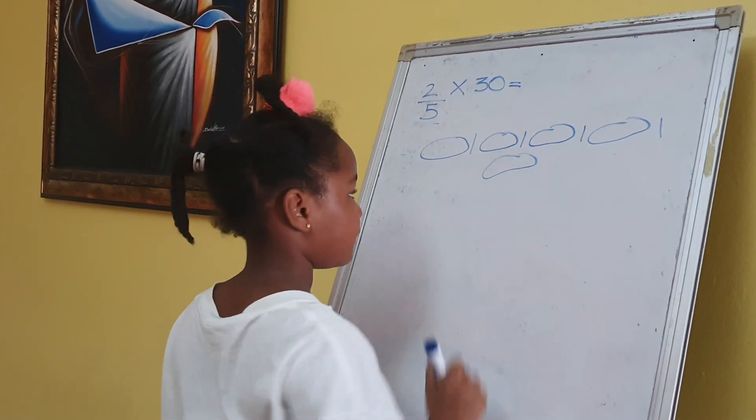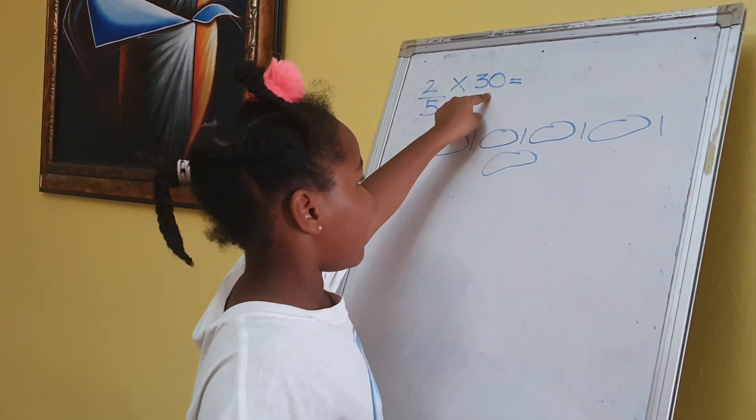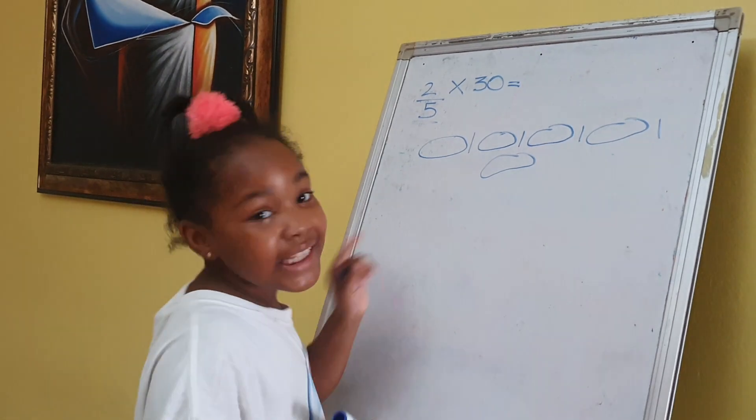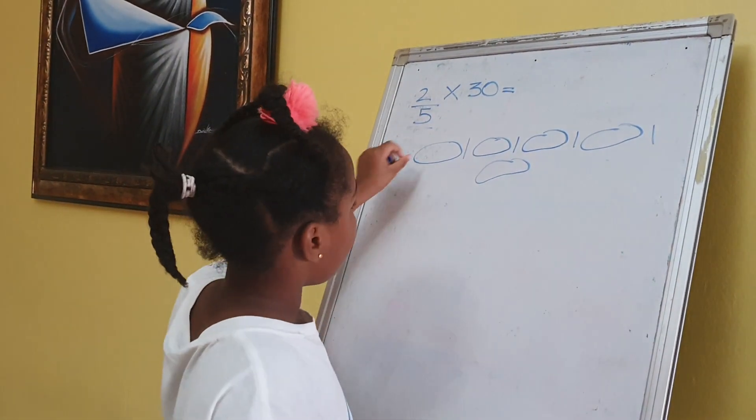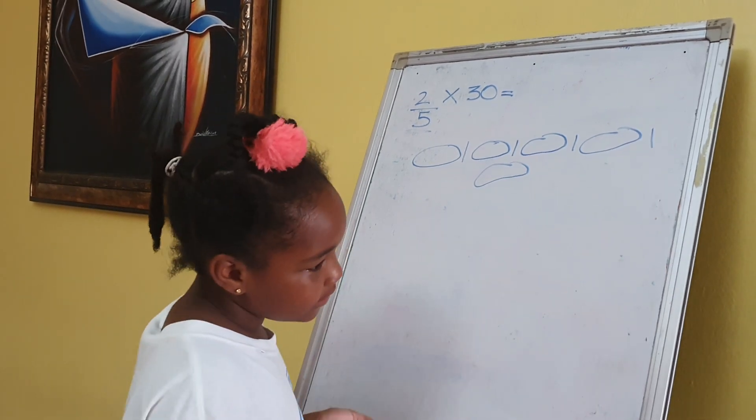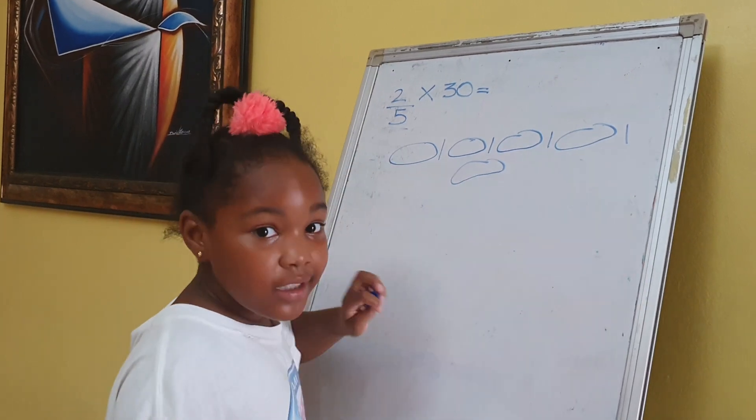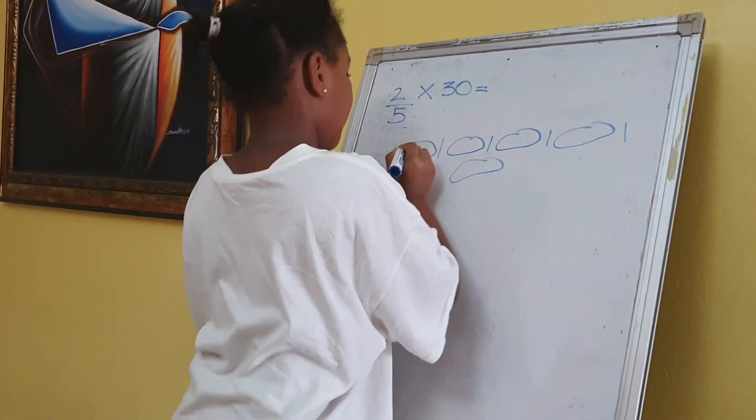All right, then what's next? And then you will care 30, and that tells you how many marbles or anything to put in the circles. Okay, so we're gonna put 30.